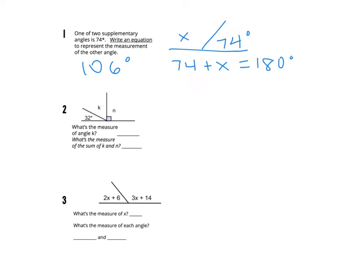Number two: we have an angle that's 32, and we're looking for the measure of angle K and N. Angle N has the box in the corner, which means it measures 90 degrees. That means the other side also needs to measure 90 degrees because we have a straight line — supplementary. So 90 minus 32 tells us that angle K is 58 degrees. We could also say 180 minus 90 minus 32, which also gives us 58. The sum of angle K and N is 58 plus 90, which equals 148.